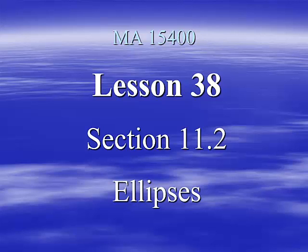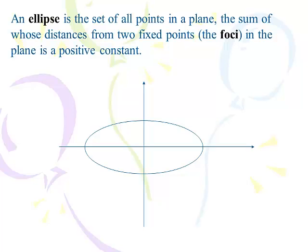Here we go with lesson 38, section 11.2: ellipses. We're going to have two lessons on ellipses, 38 and 39. Quite simply, an ellipse is a set of points in a plane, the sum of whose distances from two fixed points in the plane is a positive constant.